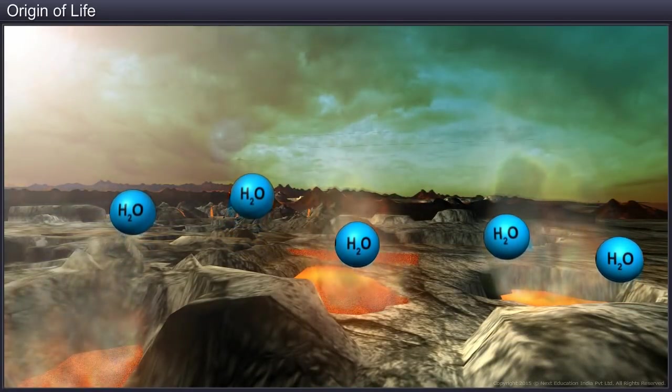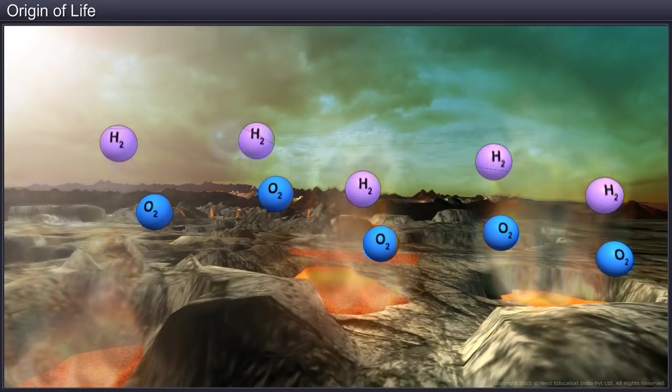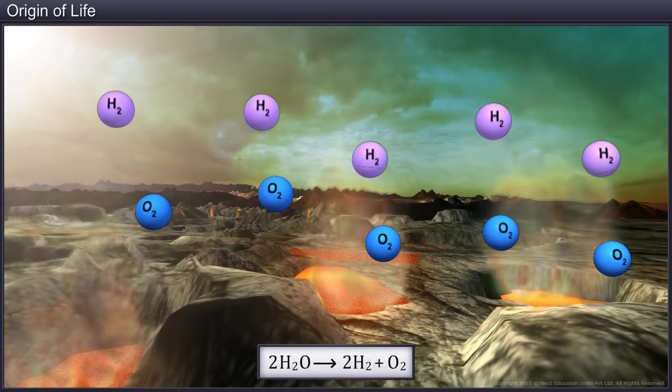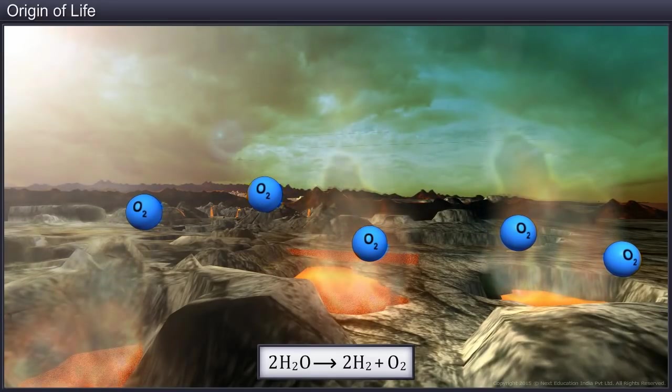Gradually, the ultraviolet rays of the sun broke up the water, which was in vapor state, into hydrogen and oxygen. Hydrogen, being a lighter gas than oxygen, escaped.